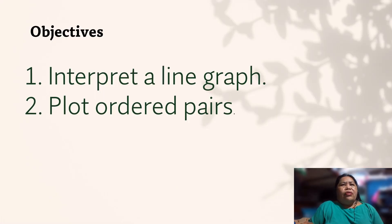Okay, so our objectives for this lesson: Number one is interpret a line graph and plot ordered pairs, and also find and add ordered pairs. For example, if x is given, what is the value of y? And if y is given, what is the value of x?